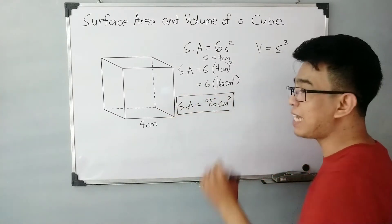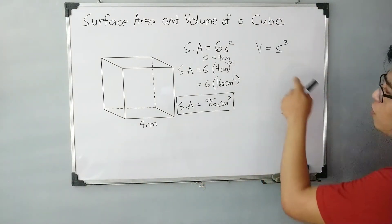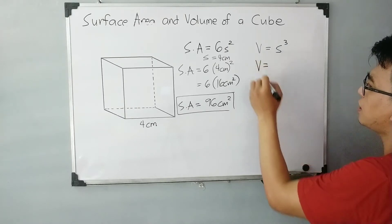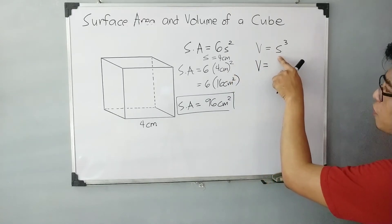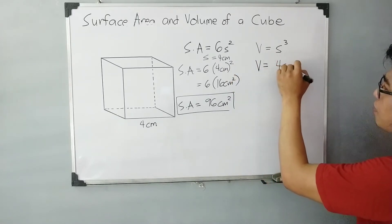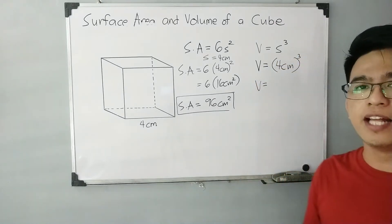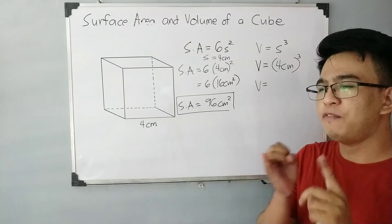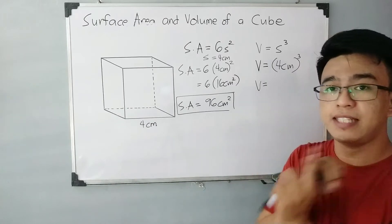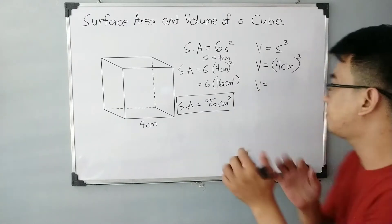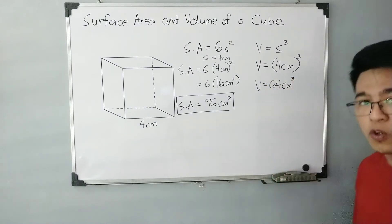That's how easy it is. For me, this is the easiest to calculate among all solid figures. Now let's move on with the volume. For the volume, V is equal to S cubed, and S is equal to 4 centimeters. Substituting 4 centimeters: you have 4 centimeters cubed, which is 4 times 4 times 4. That gives us 64 — because 4 times 4 is 16, times 4 gives you 64. So the volume is 64 cubic centimeters.